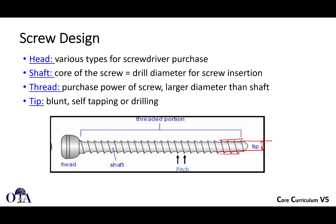You need to drill at least the core portion. For example, if this is a 3.5-millimeter cortical screw, the shaft is typically 2.5 millimeters. So you drill 2.5 to allow the shaft to enter the hole and the threads to engage the bone.